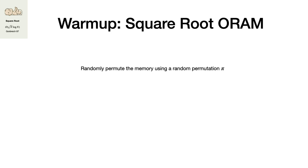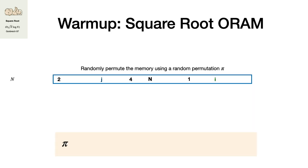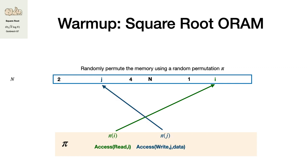We start with square root ORAM. In order to hide what we want to access, the first thing that comes to mind is to shuffle the entire memory. The client shuffles the entire memory and can also store the permutation π — this mapping. Whenever it wants to access some element i, all it has to do is compute π(i) and access that memory location to retrieve i. The server cannot learn what was accessed because it doesn't know which element actually resides in that location. However, if the client wants to access i again, it cannot go to the same memory location because then the server will see that the client accesses the same element more than once.